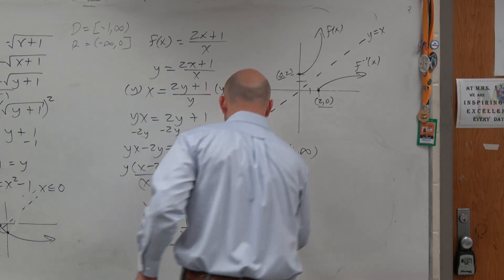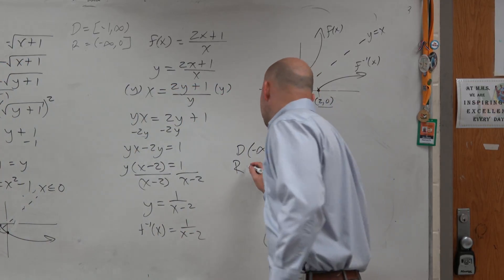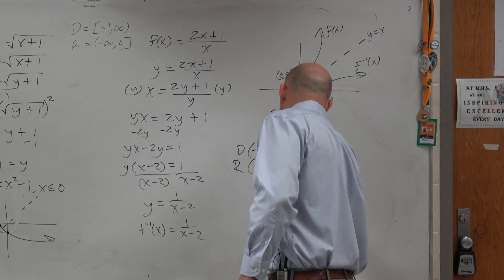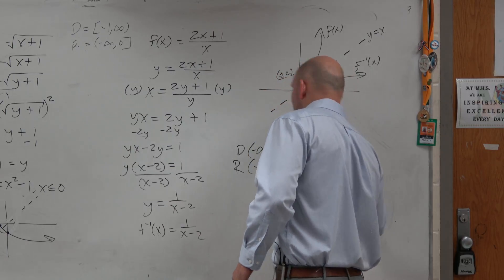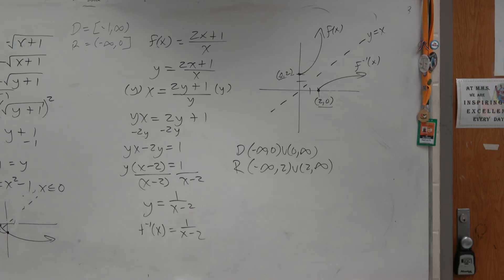So the range, which is the domain of my inverse, is negative infinity to 2, union 2 to infinity. No calculator needed. All right.